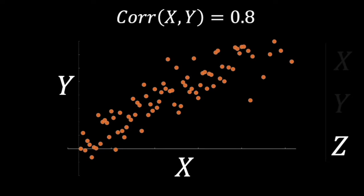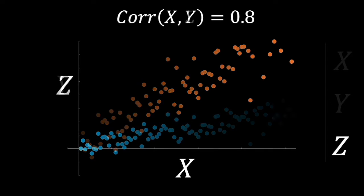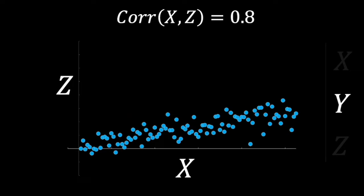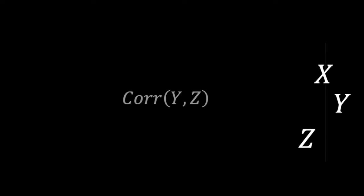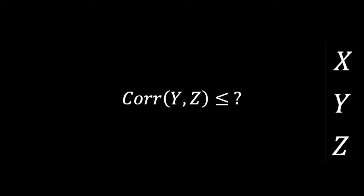There are three random variables: x, y, and z. The correlation between variables x and y is equal to 0.8. Similarly, the correlation between variables x and z is also 0.8. Given this information, between variables y and z, what is the maximum and minimum correlation possible?